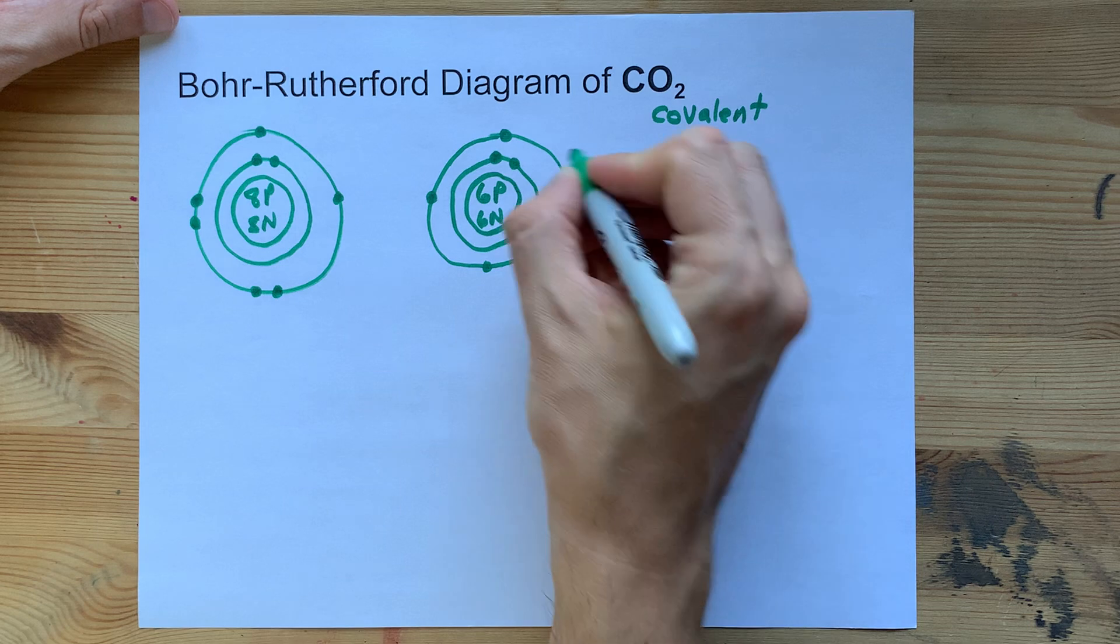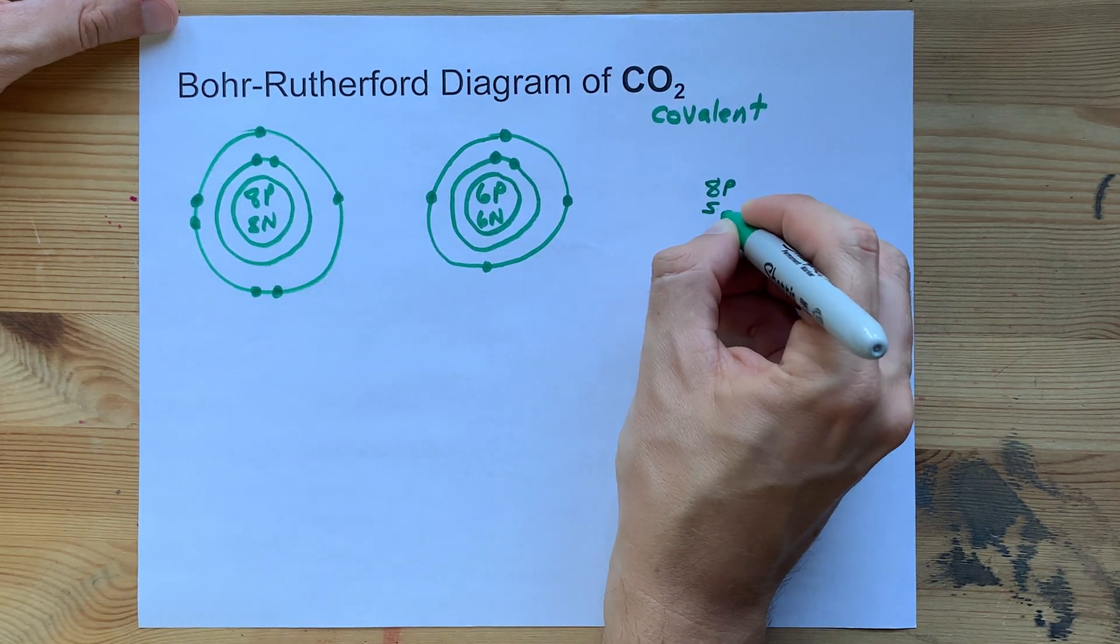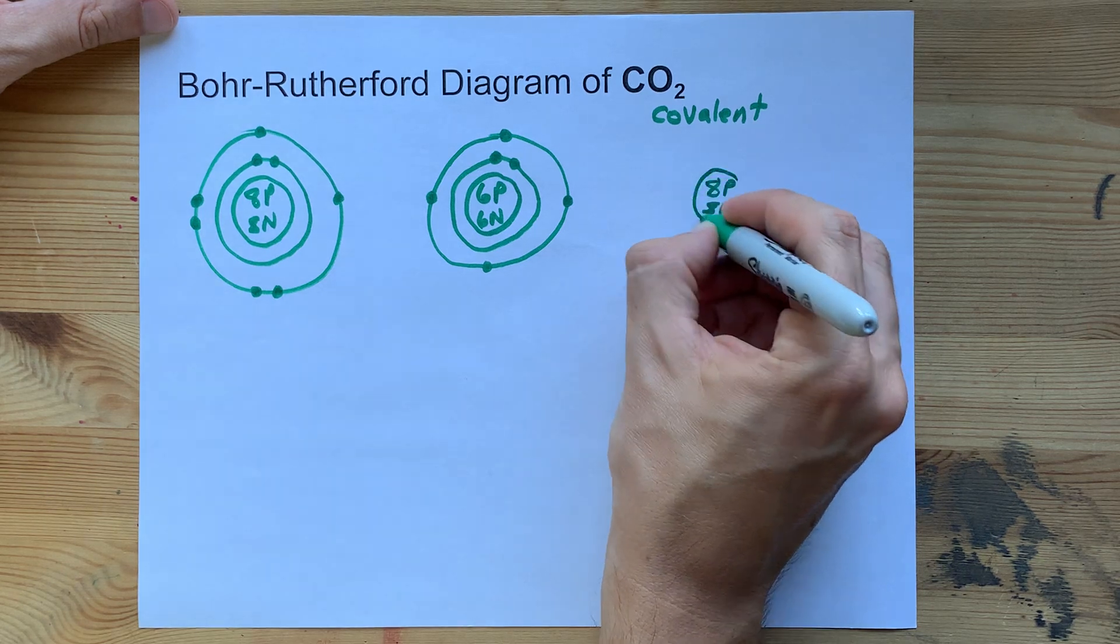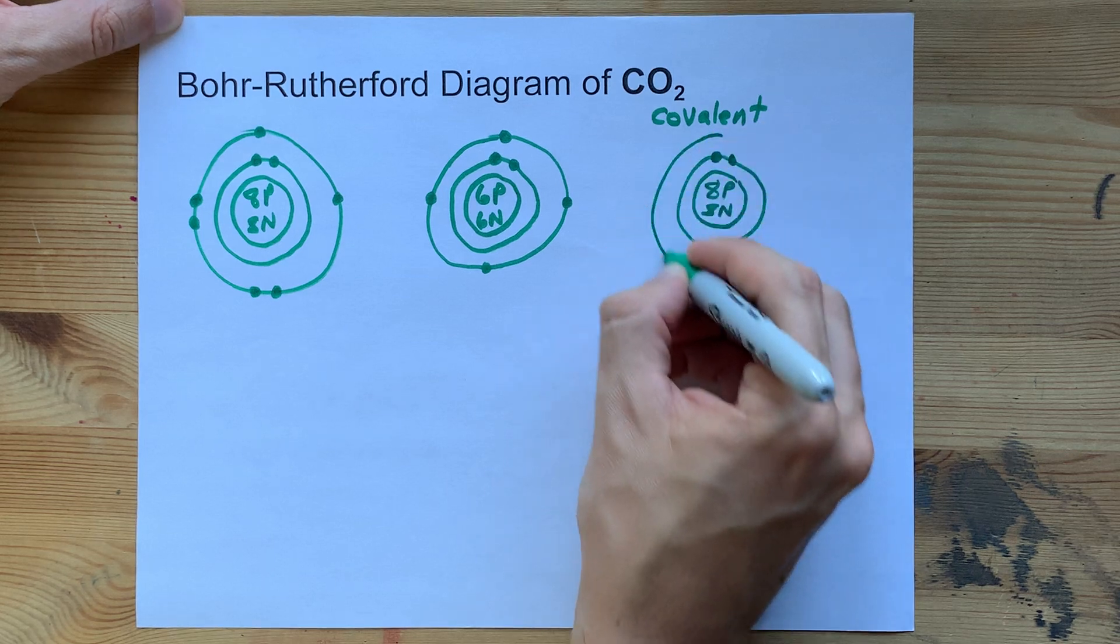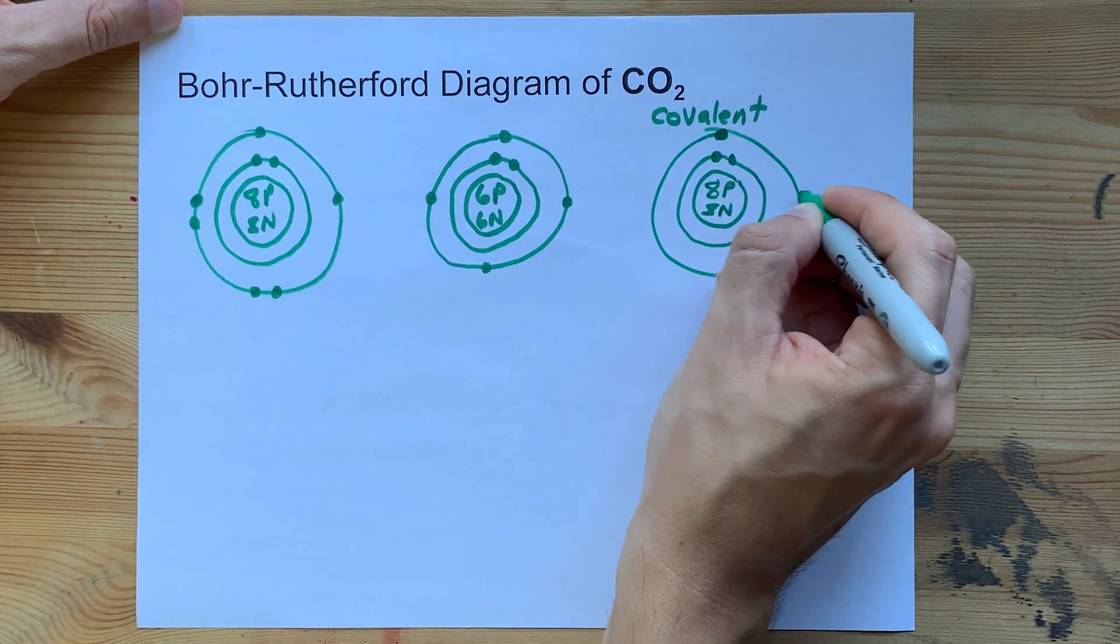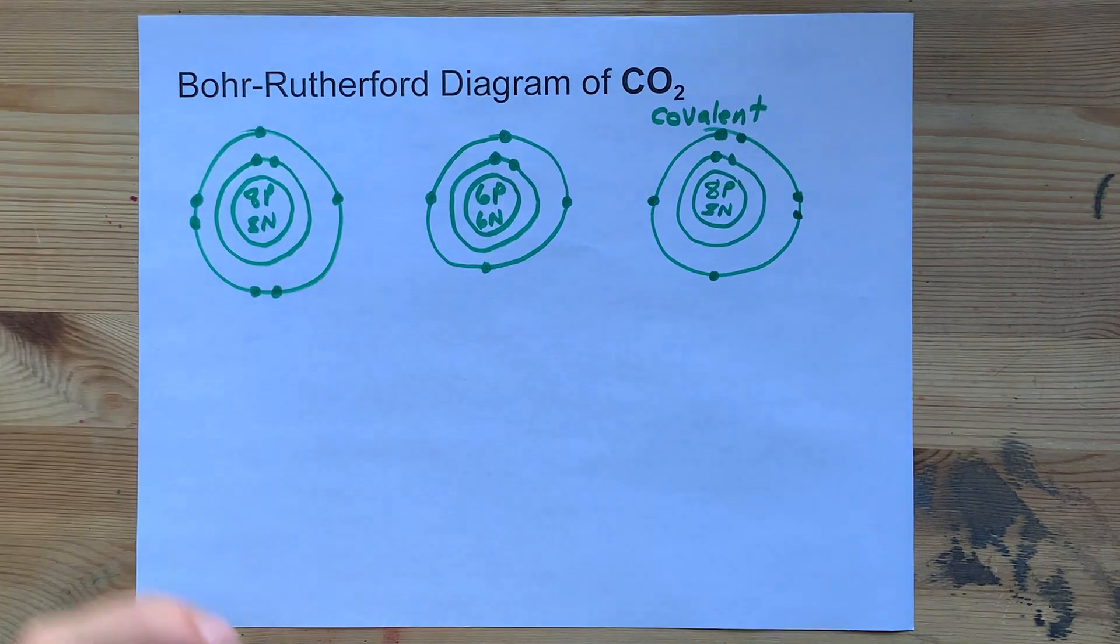I need a second oxygen because this is made of carbon and two oxygens. So let's quickly do the 8P for eight protons, eight neutrons, two electrons in the first shell, six electrons in the second shell: one, two, three, four, five, six.